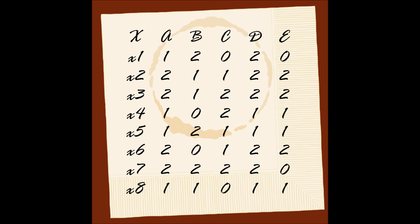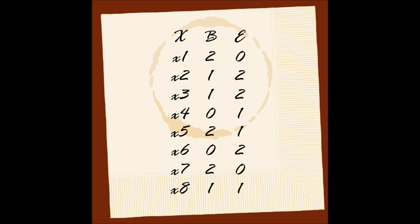Now that we have determined which elements are part of the core, we move on to the next step: removing all attributes that are not in the core. In this case, the only core attribute is B. We combine B with E and find as many rules as we can using simply the core and the decision feature. Starting with B2 — we cannot make any rules because with B2, in X1 and X7 E equals 0, but in X5 E equals 1. We need to add another attribute to remove the inconsistency.